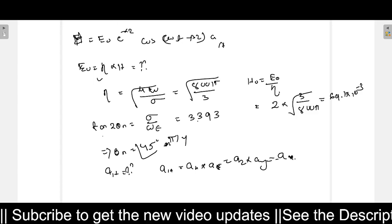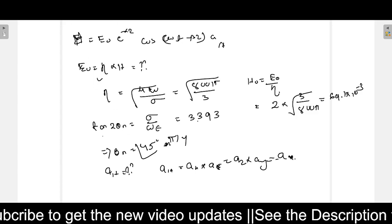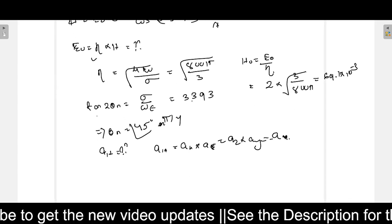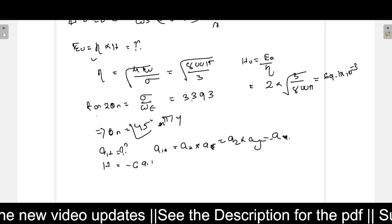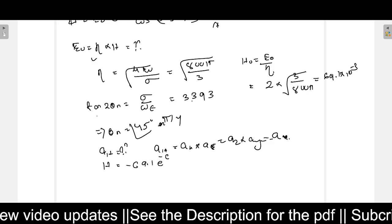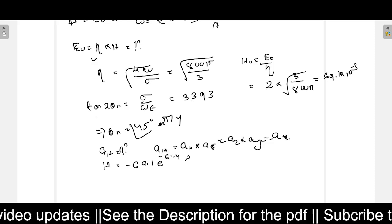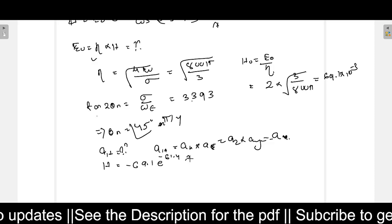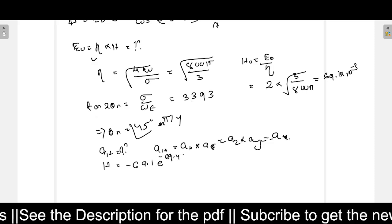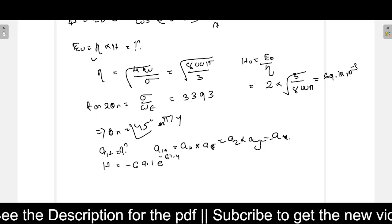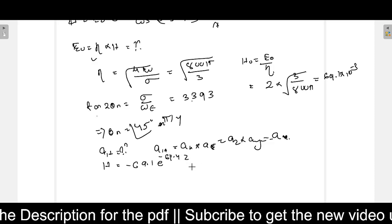So now what we can do? We can just directly write the value of H or the final answer. So H equals minus 69.1 e^(-61.4*z)...